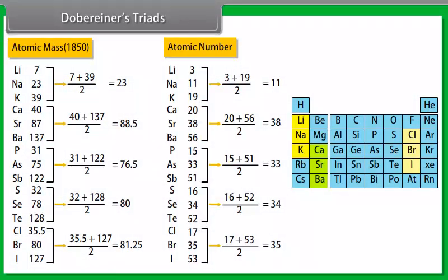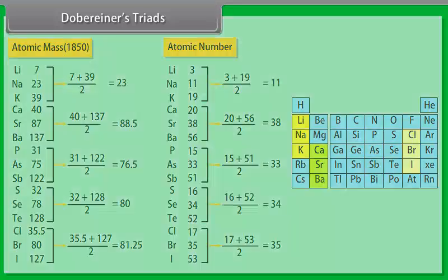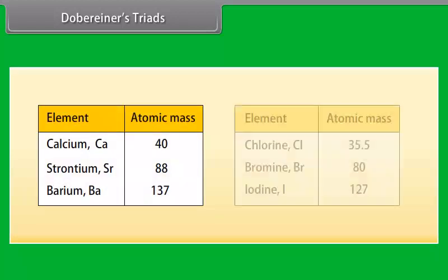He observed that the atomic mass of the middle element of a triad was equal to the arithmetic mean of the atomic masses of the other two elements. For example,